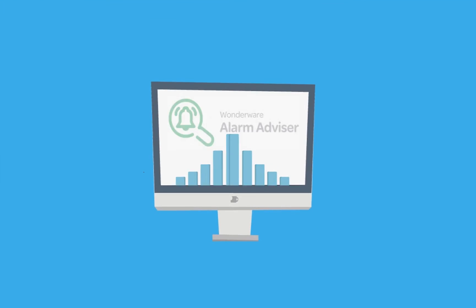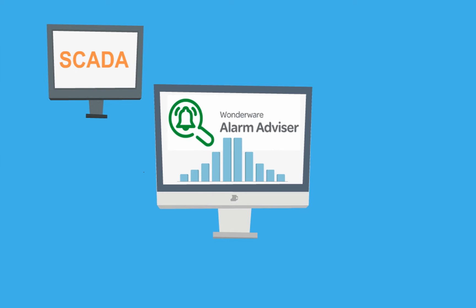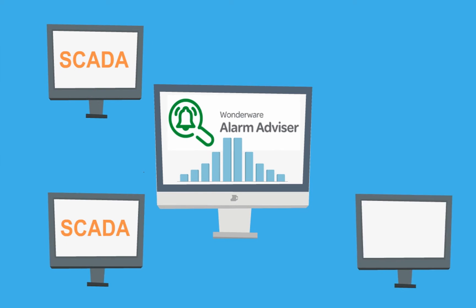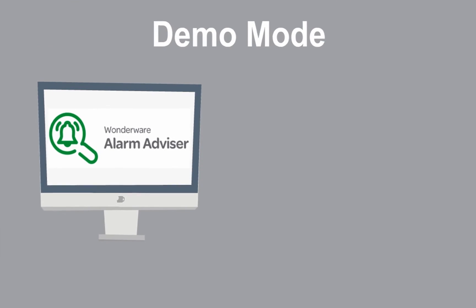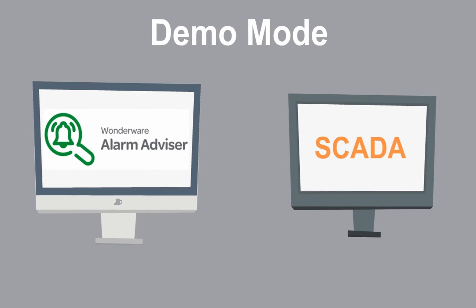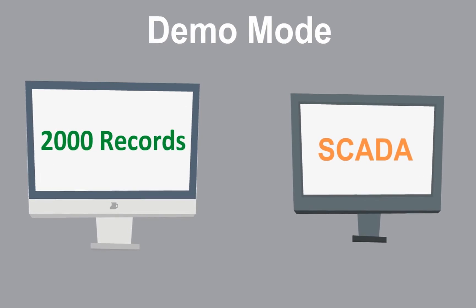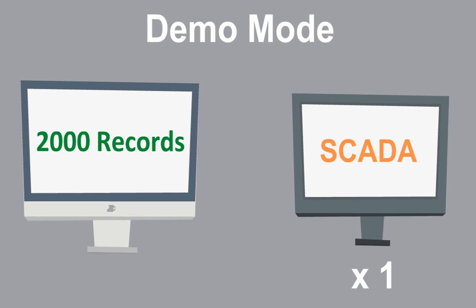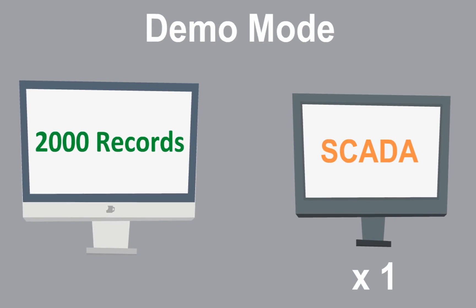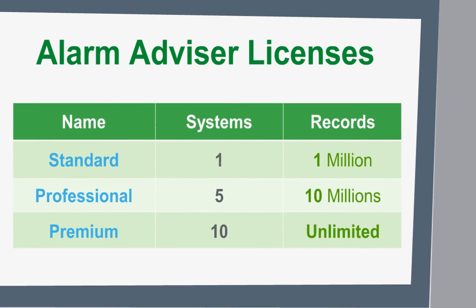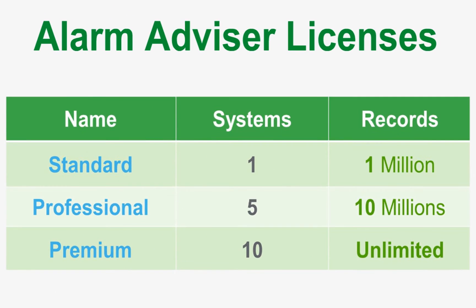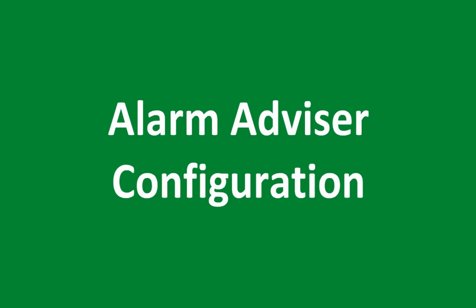Alarm Advisor connects to and consolidates data from a range of different SCADA systems. Out of the box, Alarm Advisor will run in demo mode, providing full functionality and the ability to collect up to 2,000 records from a single system. The simple electronic licensing model offers three license types, depending on your system's needs, each offering unlimited client connectivity.